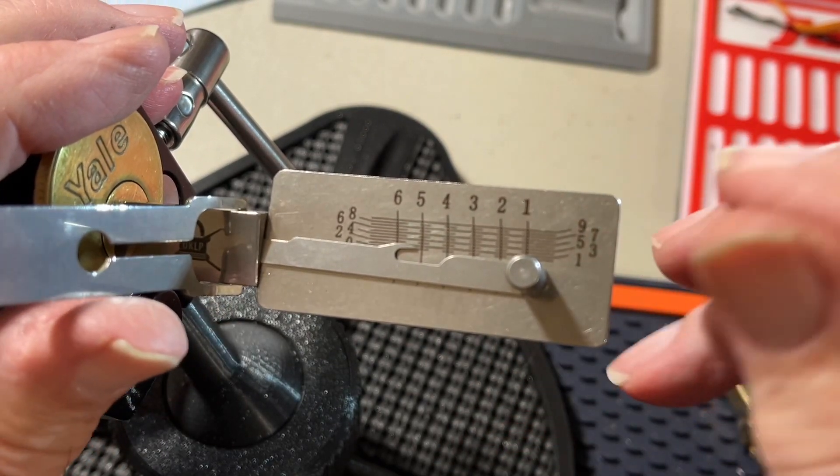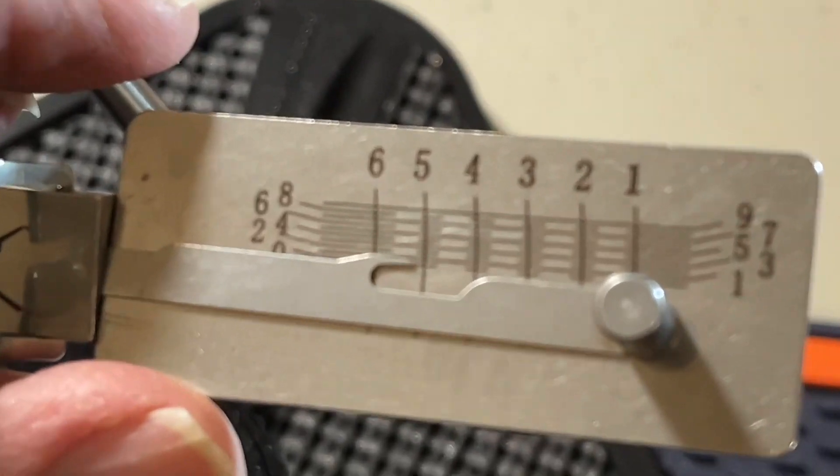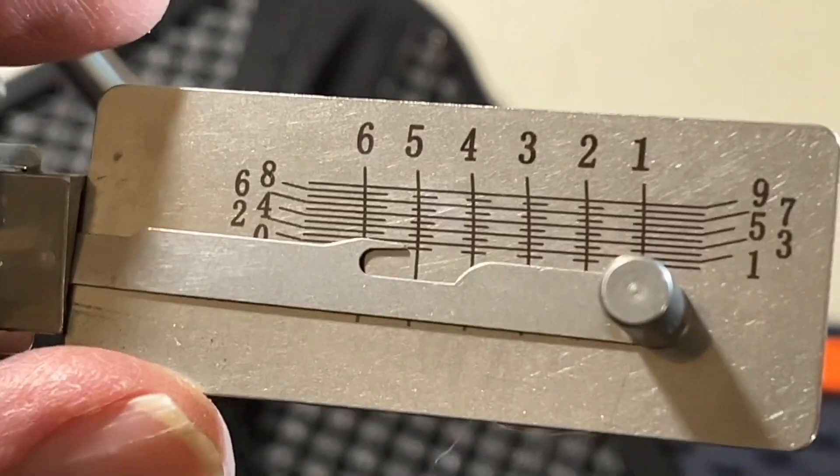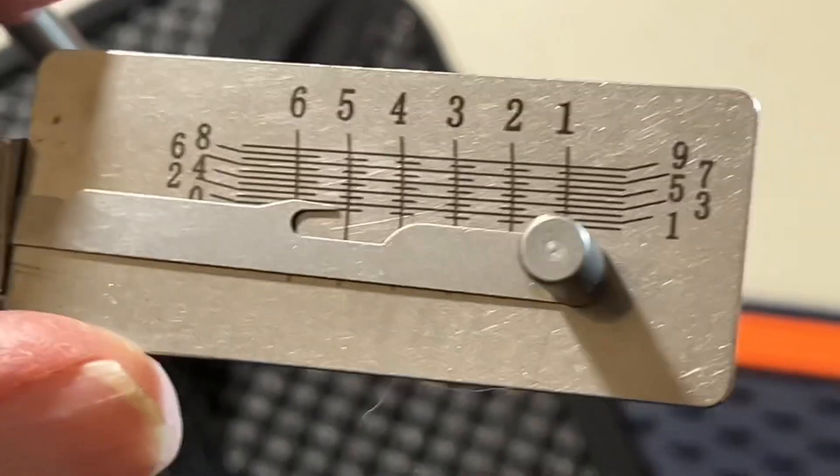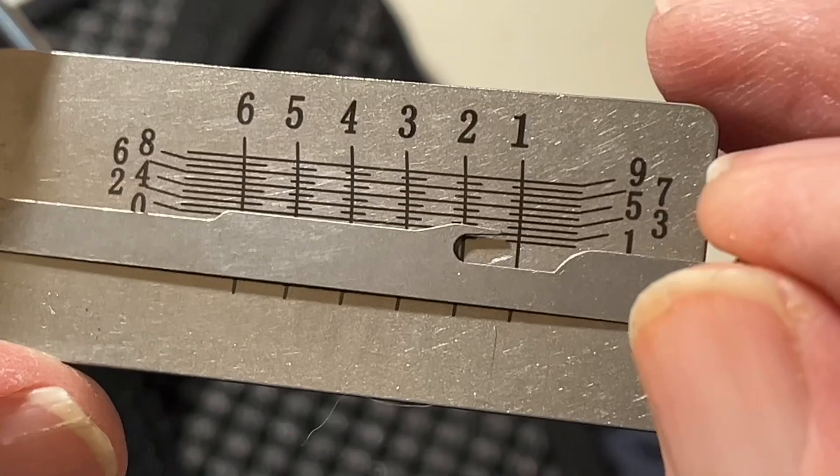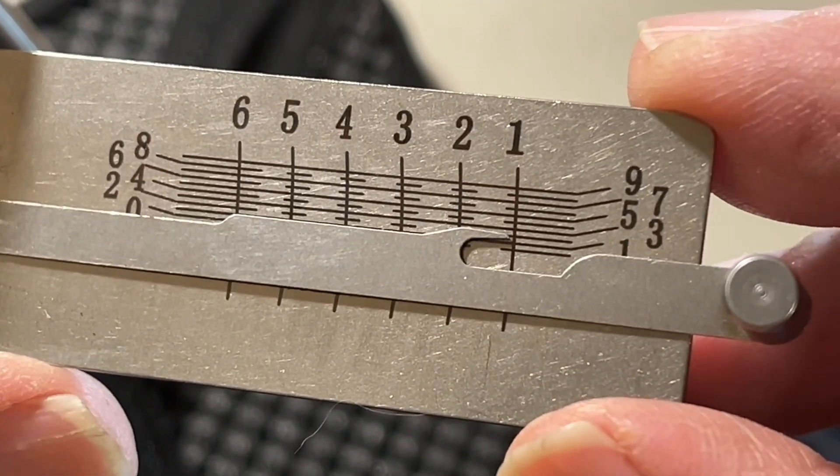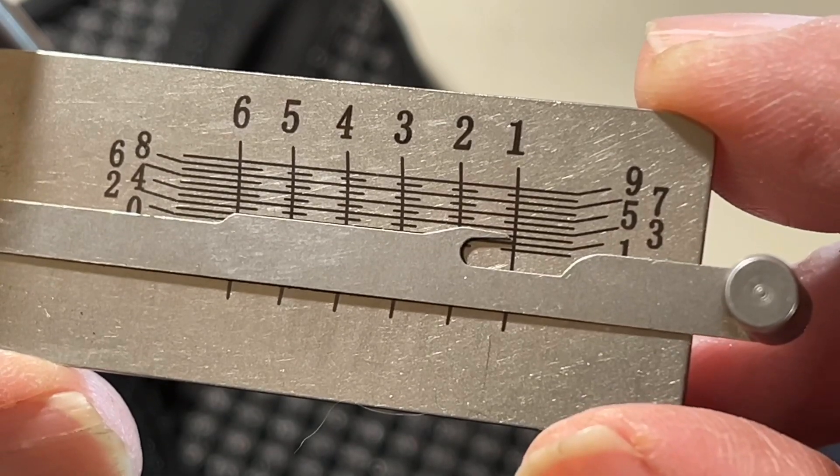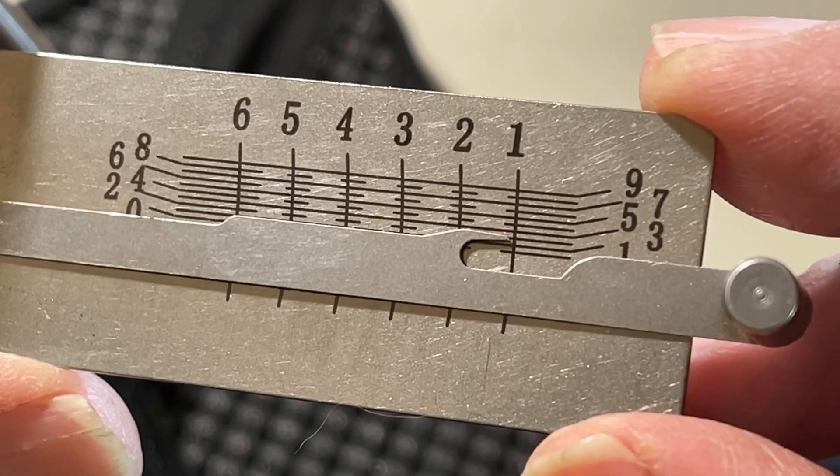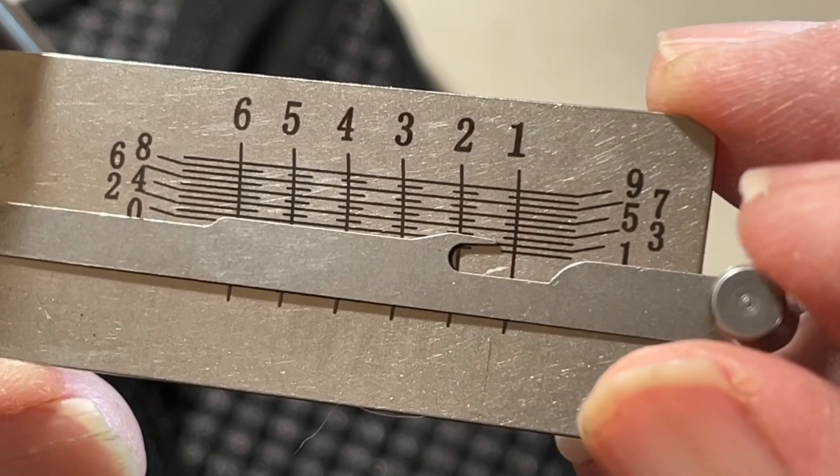And I'll try my hand at decoding. Maybe I can see better if I scoot in there a little bit. Okay, pin one appears to be... let's see, a one cut I think. No, a three cut.